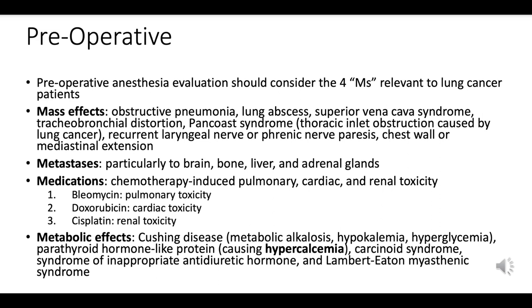Obstructive phenomena: tumors can cause obstructions in the airways, which can complicate ventilation during surgery. Obstructive phenomena can also lead to issues like obstructive pneumonia and lung abscesses. Vascular and nervous system involvement — conditions like superior vena cava syndrome or involvement of the recurrent laryngeal or phrenic nerves — are concerns due to tumor mass effects. Local extension of the tumor affecting the chest wall or mediastinum is essential for surgical planning.